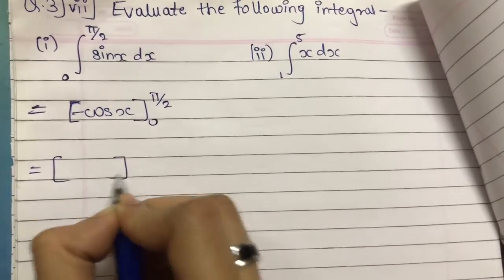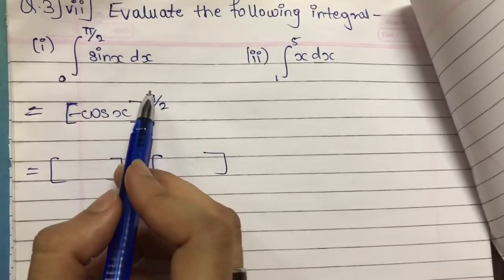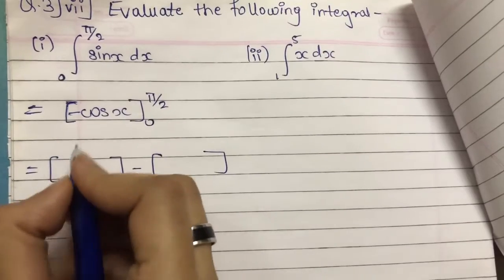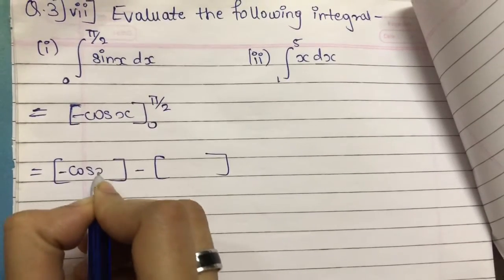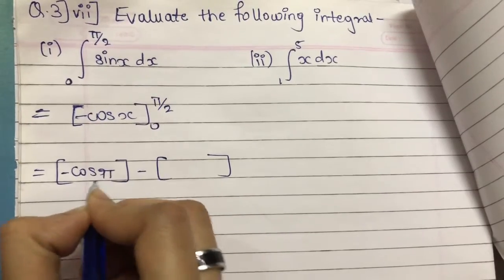After that we will make two square brackets and minus in between. Now we will first put the value of the upper limit, then the value of the lower limit at place of x. So minus cos, at place of x the value of upper limit, that is pi upon 2.